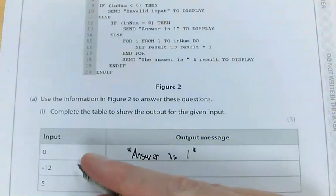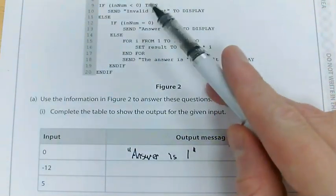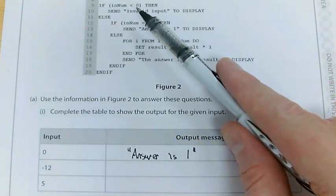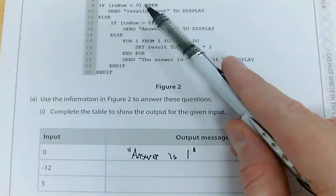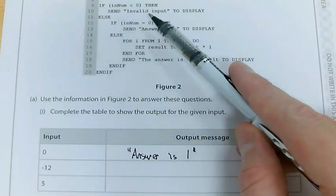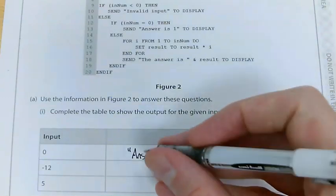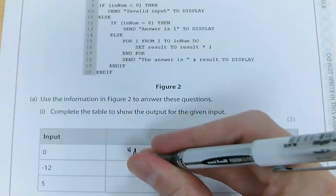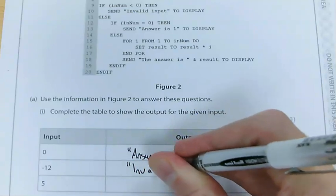Right, my next number is negative 12. So let's work that through. If inNum is less than 0, yes it is, send invalid input to display. So negative 12, my output is going to be invalid input.